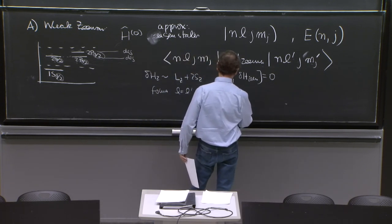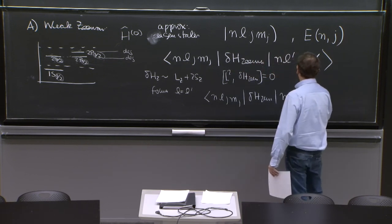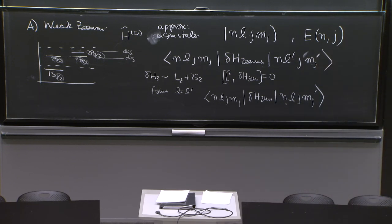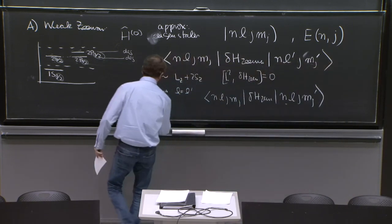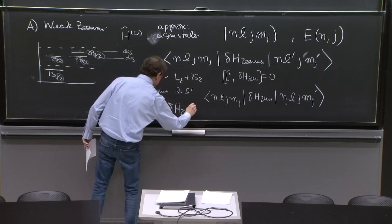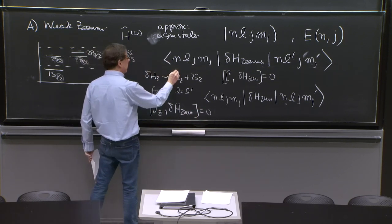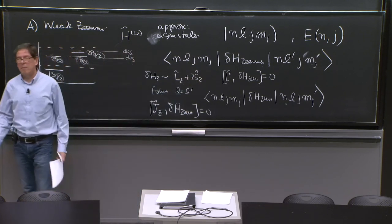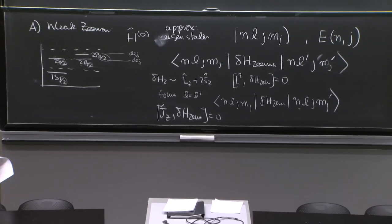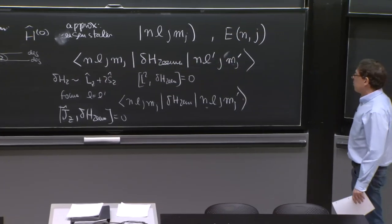So you have N, L, J, Mj, delta H Zeeman. Now N, L, J, Mj prime. It's an issue of Mj prime now. But the Zeeman thing commutes with Jz. Jz commutes with delta H Zeeman. Jz is Lz plus Sz. And z components in angular momentum, two identical components always commute, of course. So Jz commutes with delta H Zeeman. So this thing will vanish unless M is equal to M prime.